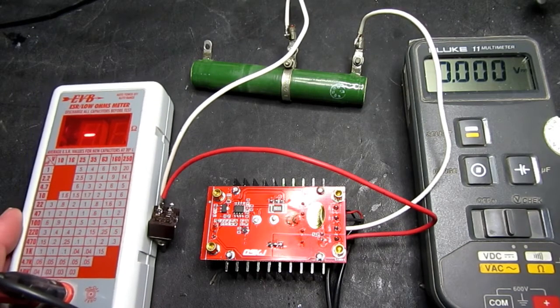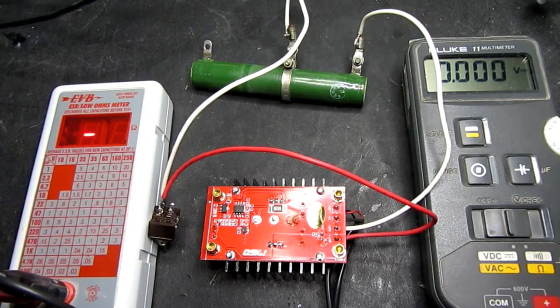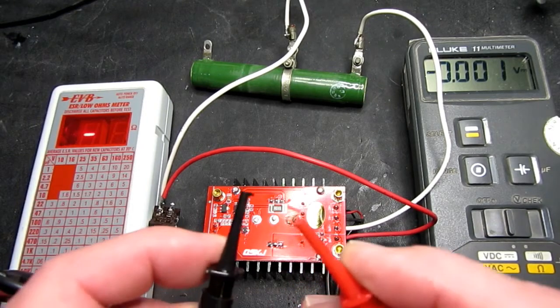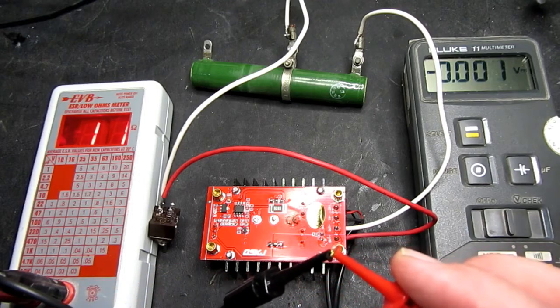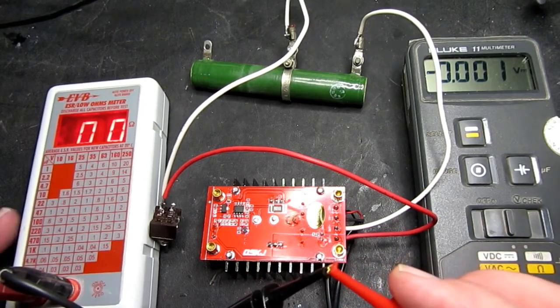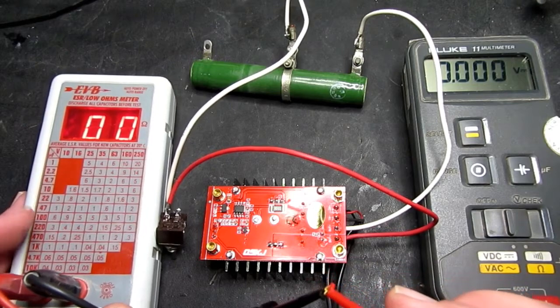With this meter here, we can measure that. We just need to calibrate it by shorting the test probes out and then pressing the calibrate button. Now we've got zero on there.